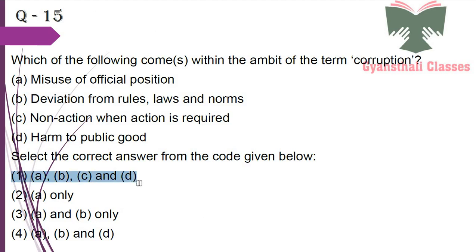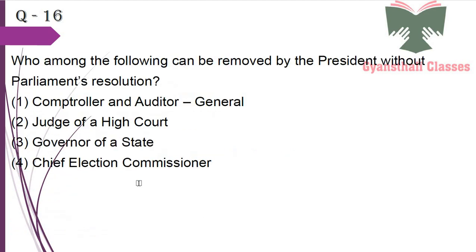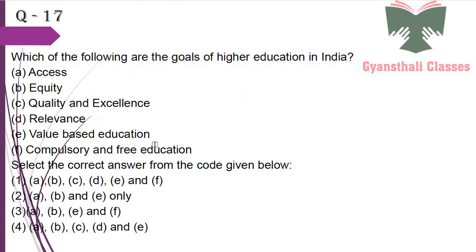Next question: Who among the following can be removed by the President without Parliament's resolution? It is the Governor of a state, who can be removed by the President without Parliament's resolution.